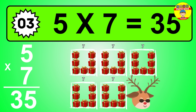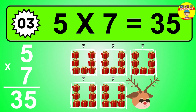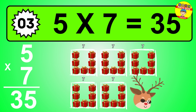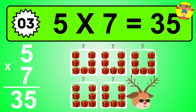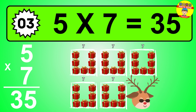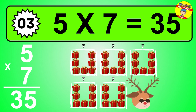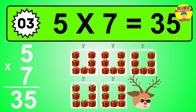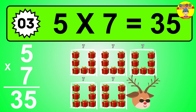The answer is five times seven is thirty-five. To calculate, we have five groups with seven balls each one. So how many balls do we have? Thirty-five balls.